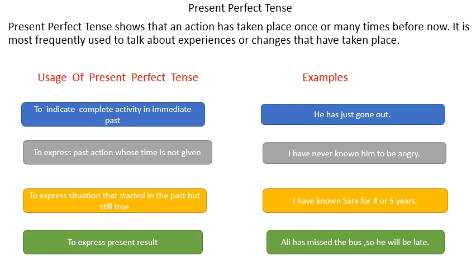Present Perfect Tense shows that an action has taken place once or many times before now. It is most frequently used to talk about experiences or changes that have taken place. There are different uses of the Present Perfect Tense.